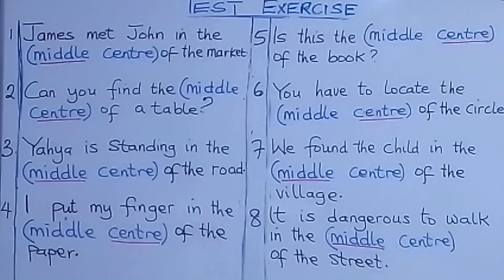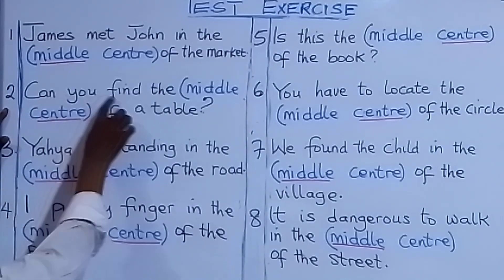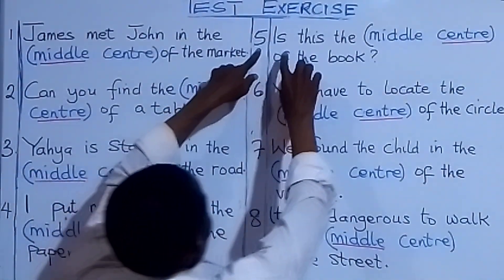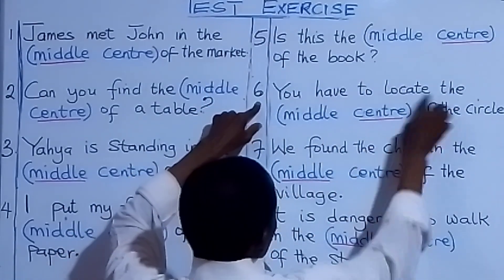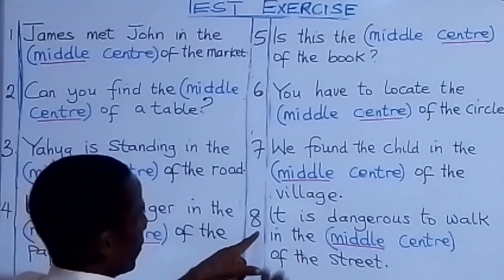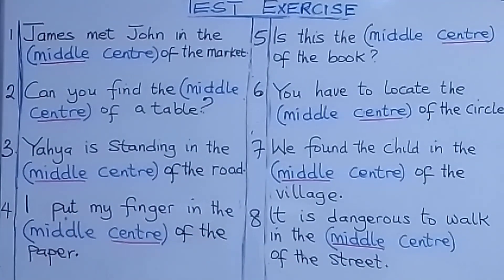Those are the answers. Let's revise everything now together: James met John in the middle of the market. Can you find the center of a table? It is standing in the middle of the road. I put my finger in the center of the paper. Is this the center of the book? You have to locate the center of the circle. We found a child in the middle of the village. It is dangerous to walk in the middle of the street.